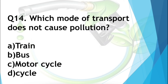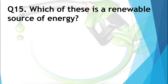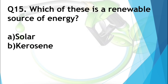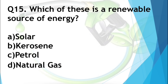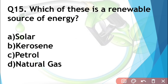Question number fifteen: Which of these is a renewable source of energy? Options are solar, kerosene, petrol, or natural gas. Kerosene, petrol, and natural gas are all petroleum products and are non-renewable. But solar energy is a renewable resource, so solar is the answer.